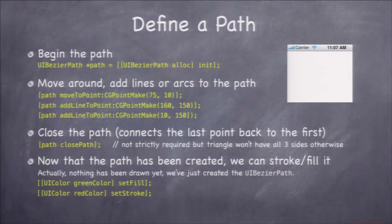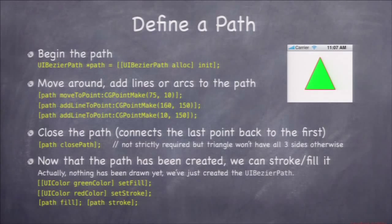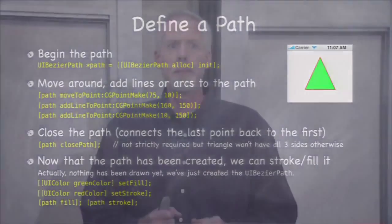When you want to actually draw, you set your fill color and stroke color by calling setFill and setStroke on a UIColor. You can also just call set and it sets both fill and stroke to that color. Once your colors are set, you send fill and stroke messages to the path, and now it will actually draw. Those last two calls — fill and stroke — are what cause drawing to happen. Everything else is just setup.